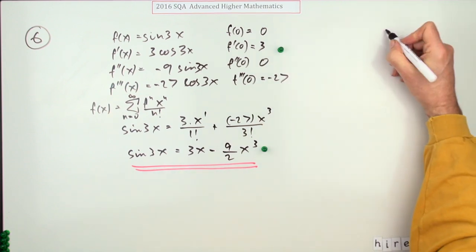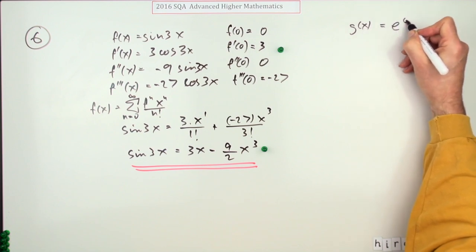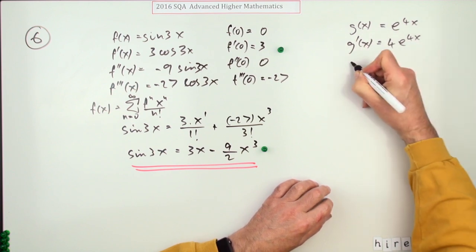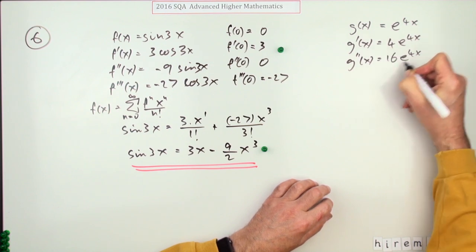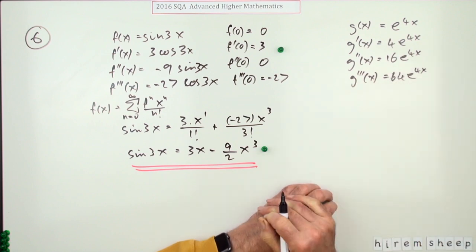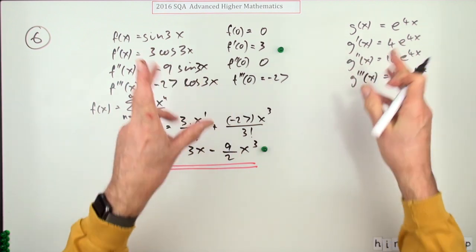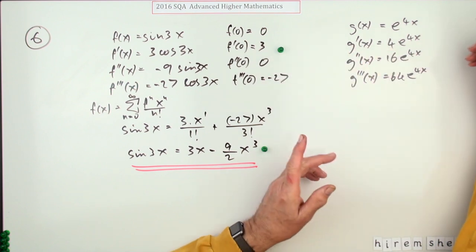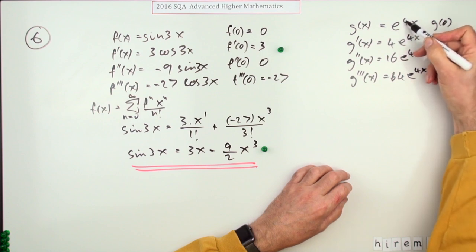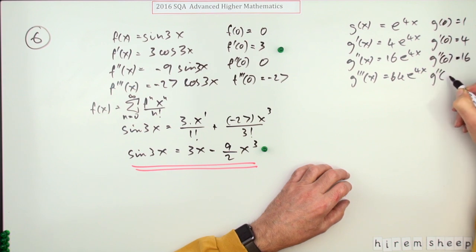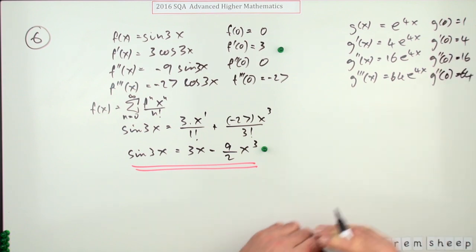Similarly for E to the 4X, I'll call it something else this time. G of X is E to the 4X. So G dashed of X is 4E to the 4X. Next one is 16E to the 4X. Next one is 64E to the 4X. But you still need evaluating. Again, the same thing applies. There's a variety of ways of allocating the first mark, but in the end, essentially, you don't get the first mark to have done the whole business really. So G of 0, well, E to the power of 0, these are all 1, so it's just whatever the numbers are in front. So that'll be 1. G dashed of 0 will be 4. G double dashed will be 16. And the last derivative will be 64.